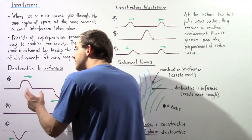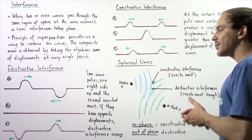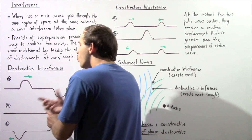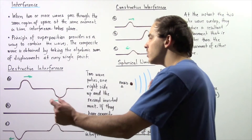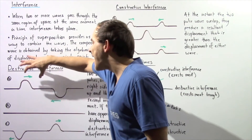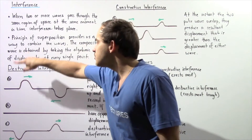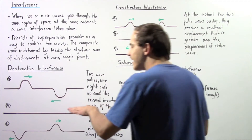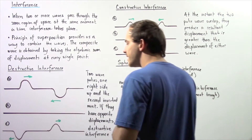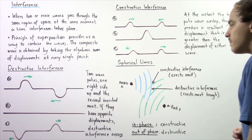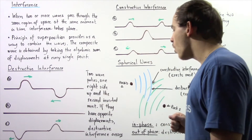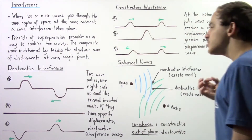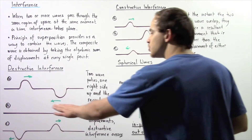They have the same exact magnitude of amplitude, but they point in different directions. When these two waves meet in the middle and overlap, because they have the same magnitude of displacement but opposite signs, destructive interference will take place. They will essentially cancel one another out, and we'll see a flat region in the middle, as shown in part B.